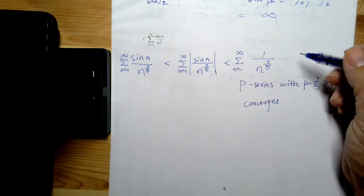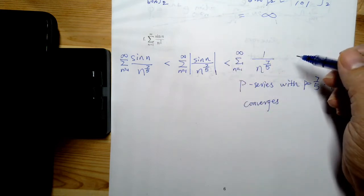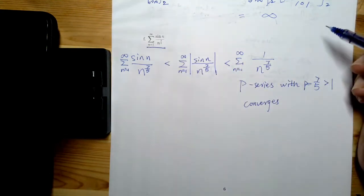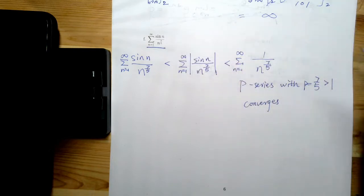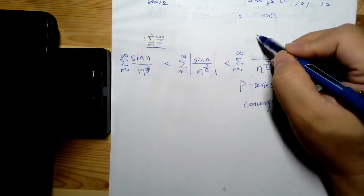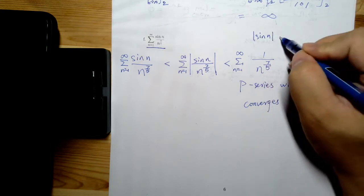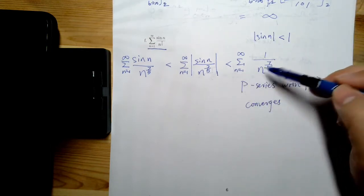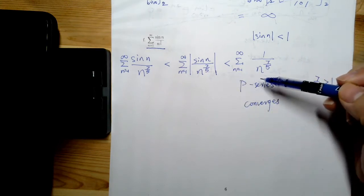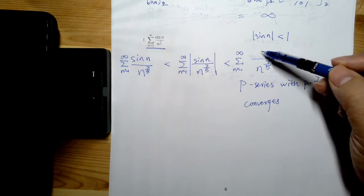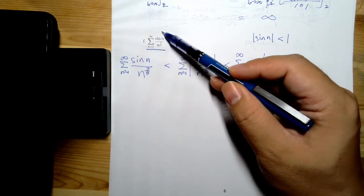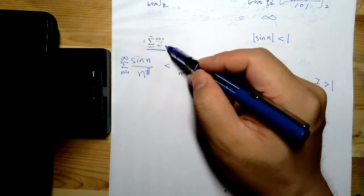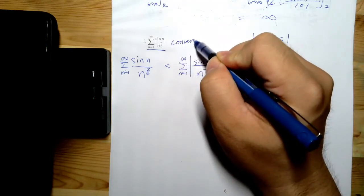For this case, what I need to do is show that this series is absolutely convergent first. I take the absolute value series, and I know that the absolute value of sine of n is less than 1. So based on that, I can use the direct comparison to show this series converges — hence, this series is absolutely convergent.